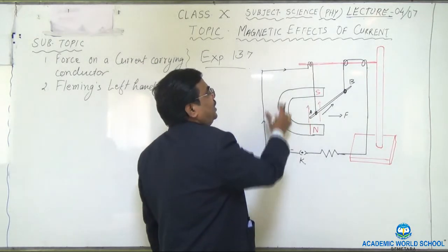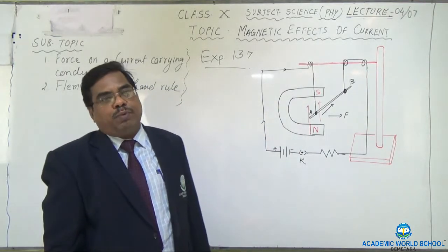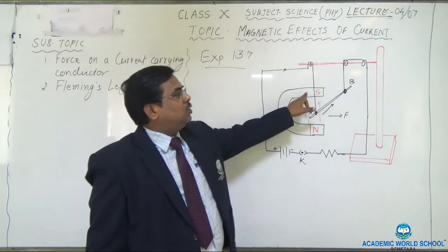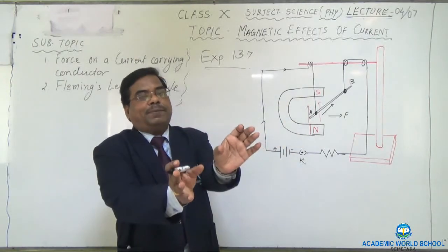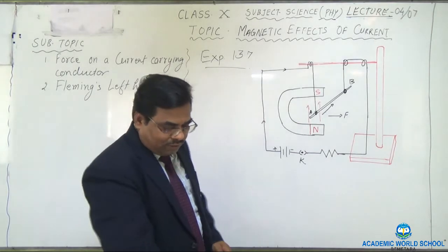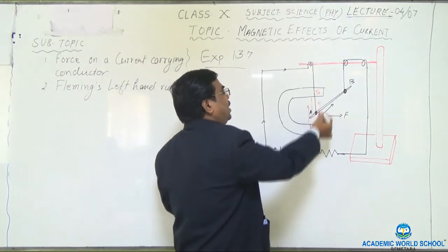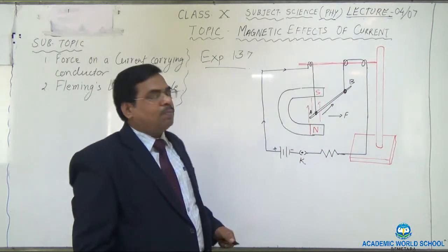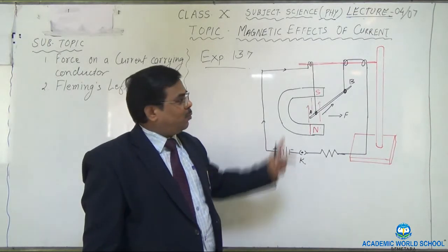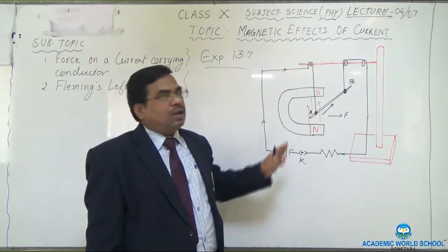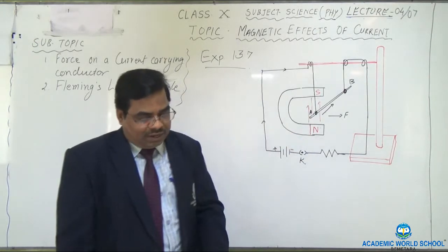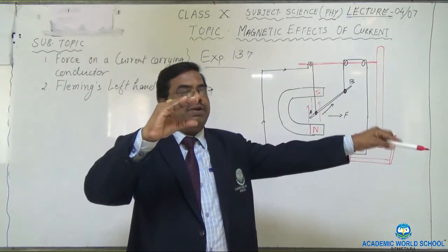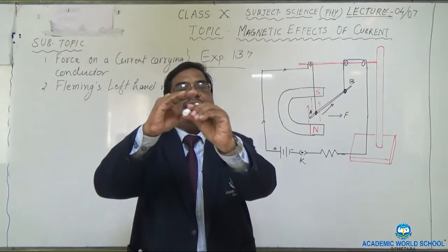There is a horseshoe magnet kept here. A horseshoe magnet has two poles — north and south — kept close to each other. In between the two poles, there are parallel field lines going from north and terminating at south. So they form a uniform magnetic field in the upward direction. The horseshoe magnet is like a U-shaped magnet, and in between that, the conductor AB is kept.